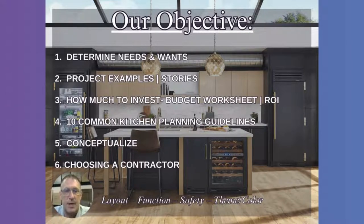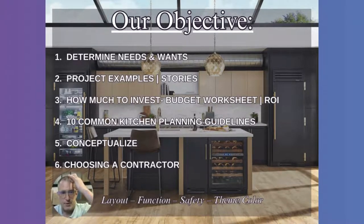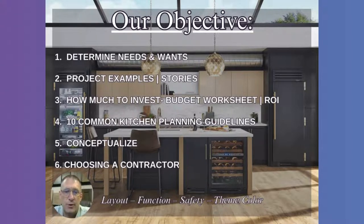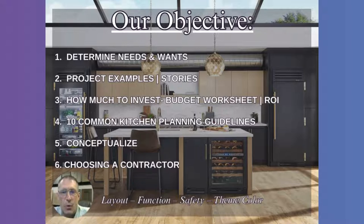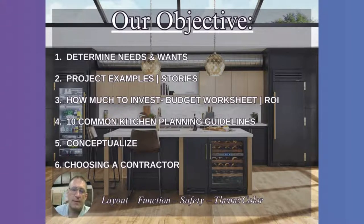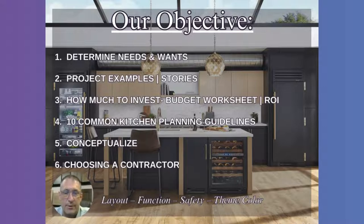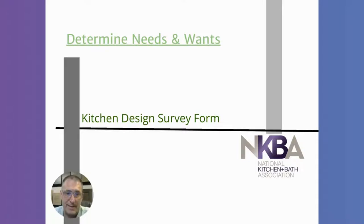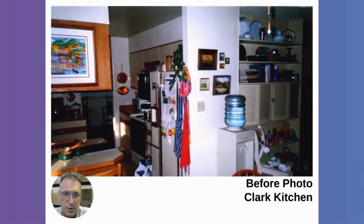The objective of what I'm going to share with you today is to help you determine your needs and wants. I'm going to share some project examples and stories, help you know how much to invest, and give you a budget worksheet you can download. We'll cover what to expect for your return on investment, common kitchen planning guidelines, how to conceptualize your kitchen, and how to choose a contractor. The needs and wants survey is provided by the National Kitchen and Baths Association.